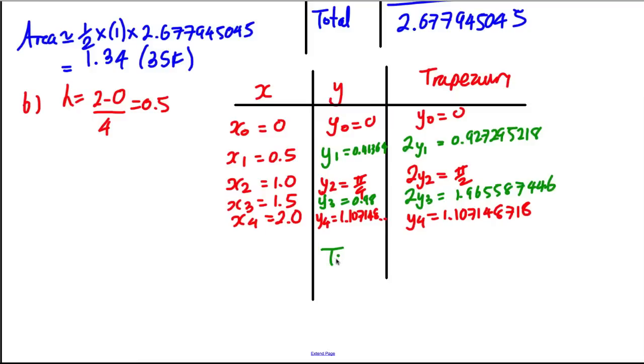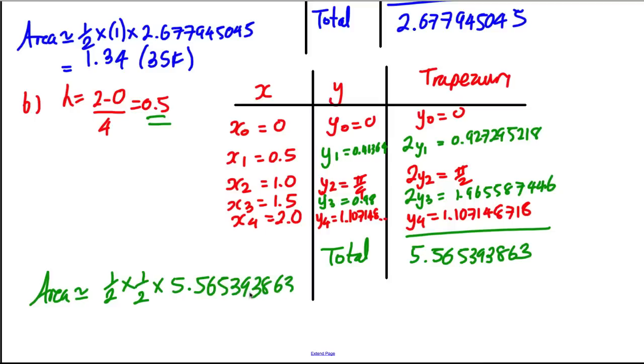Okay, so now I'm going to total this up. So I'm going to add that to pi by 2 to 0.927295218 plus 1.107148718. And when I add those things together, I get 5.565393863. And so my area is approximately a half H times this. So a half times my H this time, which is actually 0.5. So a half times a half times 5.565393863. And that approximates to 1.39 to 3 significant figures this time.